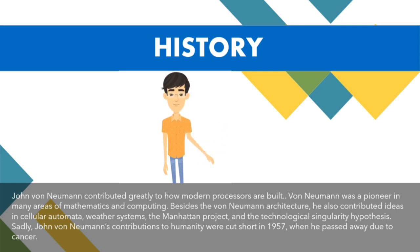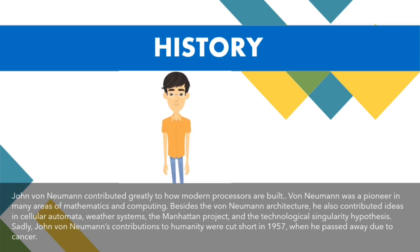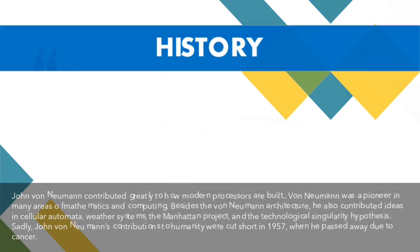John Von Neumann's idea was simple: put both instructions and data into the same memory unit and treat instructions as any other piece of data. Although this idea sounds simple, certain computer instructions had to be invented for Von Neumann's idea to work in practice. Today, these types of instructions are taken for granted as they are used in almost all programs. Von Neumann, although influential, was not the first one to design a general purpose computer architecture.